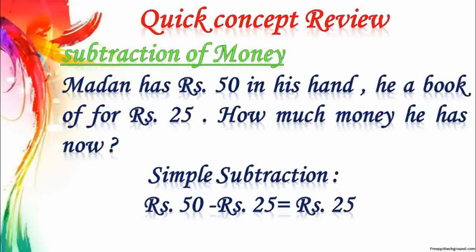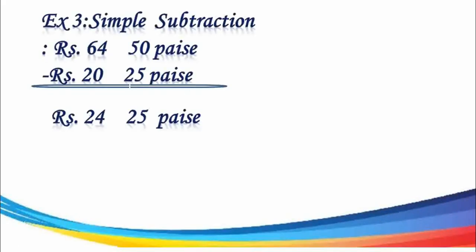Now, subtraction of money. Madan has Rupees 50. He purchases a book for Rupees 25. How much money does he have now? Simple subtraction: Rupees 50 minus Rupees 25 equals Rupees 25. For further examples, the same rule applies: first subtract paise, then subtract rupees. For example, 50 Paise minus 25 Paise equals 25 Paise; Rupees 64 minus Rupees 20 equals Rupees 44. Answer: Rupees 44.25.